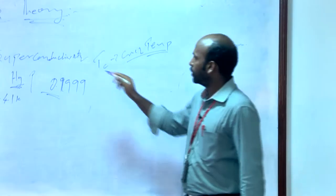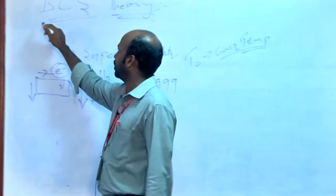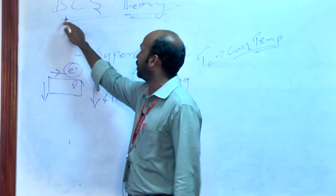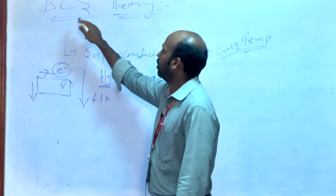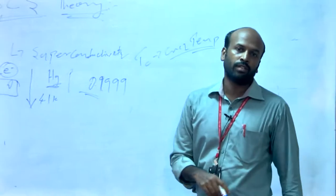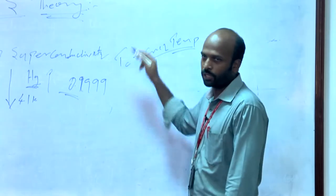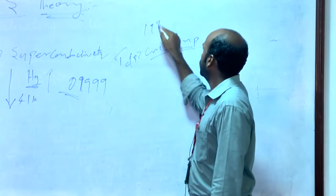BCS theory is named after three scientists: Bardeen, Cooper, and Schrieffer. They formulated the theory called BCS theory and were awarded the Nobel Prize for that in 1972.